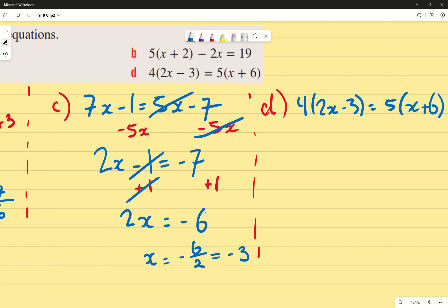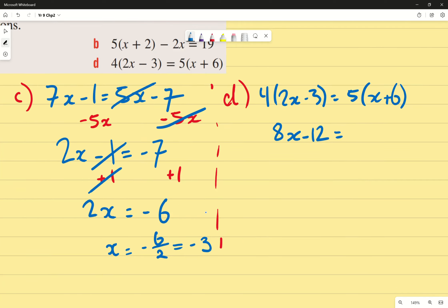4 times 2x, 8x. And remember, then we have to multiply the other thing as well. In this case, 4 times negative 3. Thank you. 4 times negative 3. Remember the negative. That brings it to negative 12. Which equals, and then 5 times x, 5x, 5 times positive 6 is positive 30. I really hope you're writing this down as I go along. Thank you very much to those of you that are.